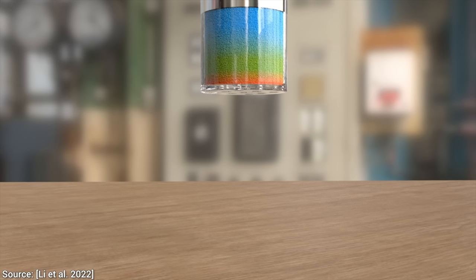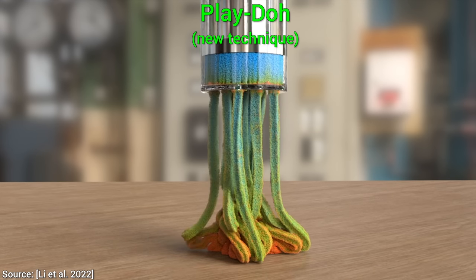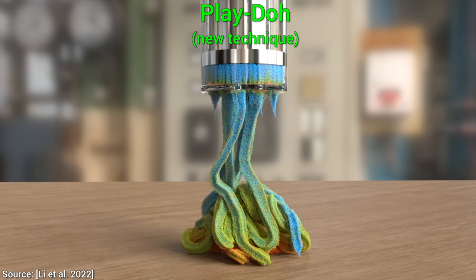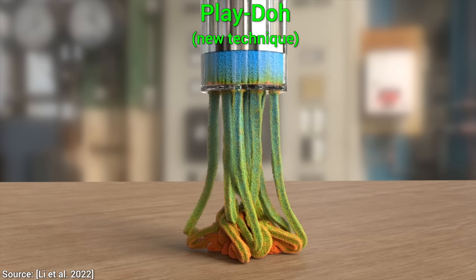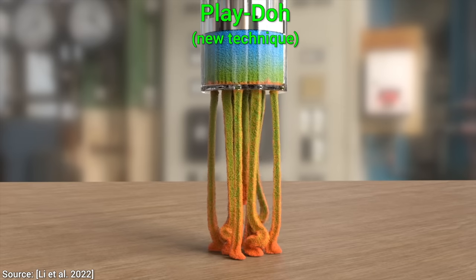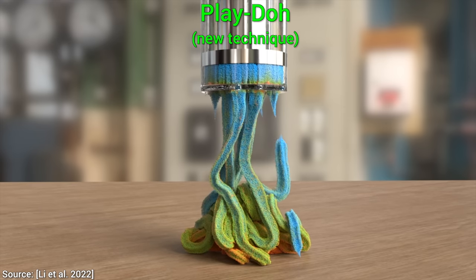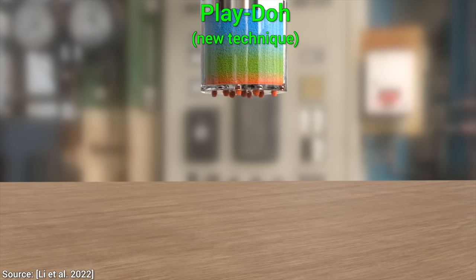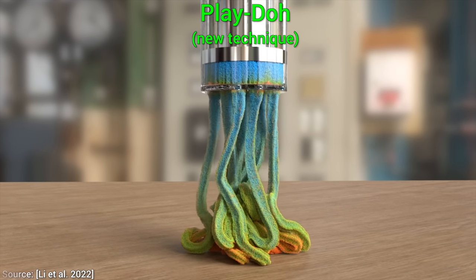And now, experiment number three, Play-Doh. This is a challenging scene where Play-Doh is being squeezed through a cylindrical noodle mold, and this requires an elaborate plasticity simulator. As you can see, this can pull it off beautifully. Wow! Isn't this scene incredible?